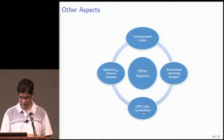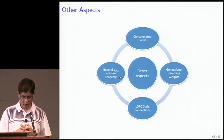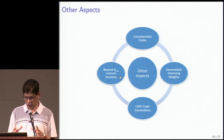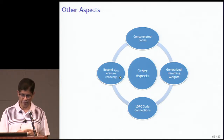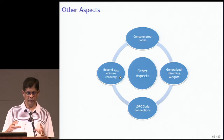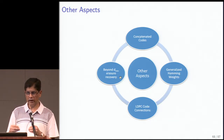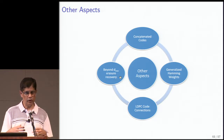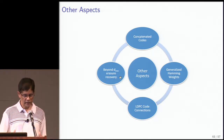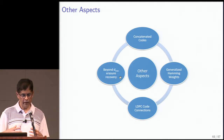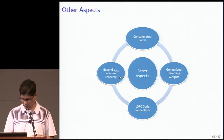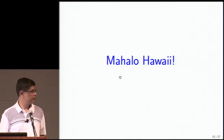Parikshit's team has also been focusing on something very useful in practice: codes with locality have a bound on minimum distance governing the worst case, but sometimes you can do better. How do you design codes which, for a given minimum distance, handle as many other cases as possible in the best way? That's another direction being explored.